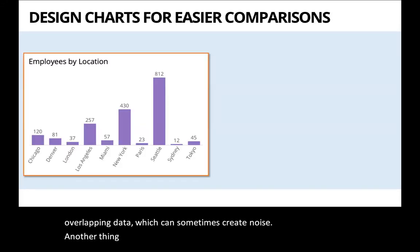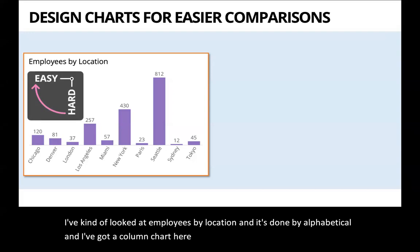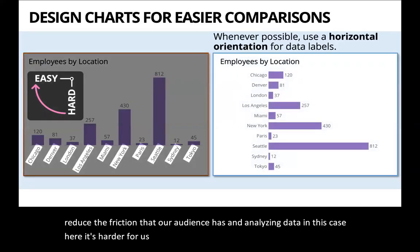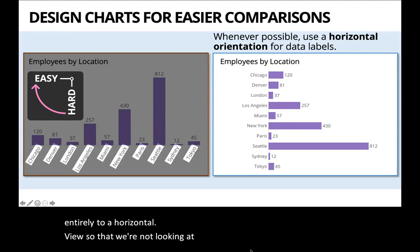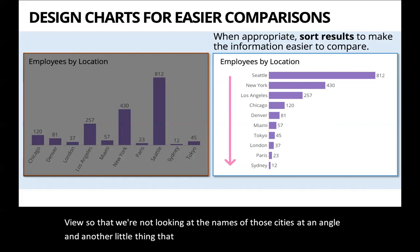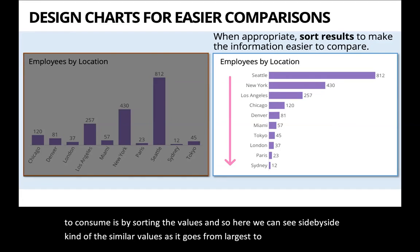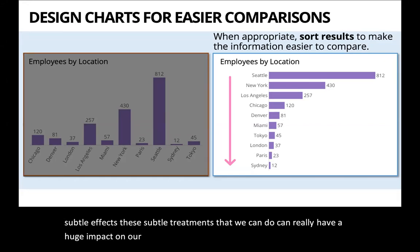Another thing: when exploring data, you might have employees by location sorted alphabetically in a column chart. One challenge is that labels on an angle are harder to read. What we might do is change the rotation entirely to a horizontal view so we're not reading city names at an angle. And another subtle treatment is sorting the values from largest to smallest. These subtle effects can have a huge impact on our presentation and on how we communicate insights to an audience.